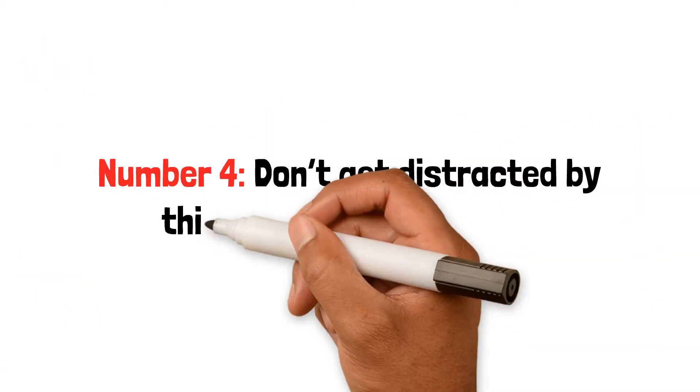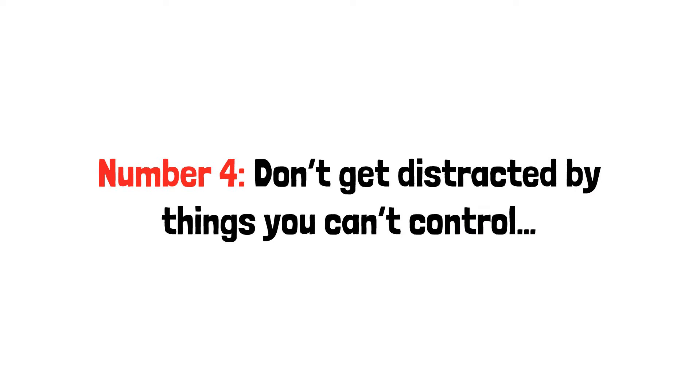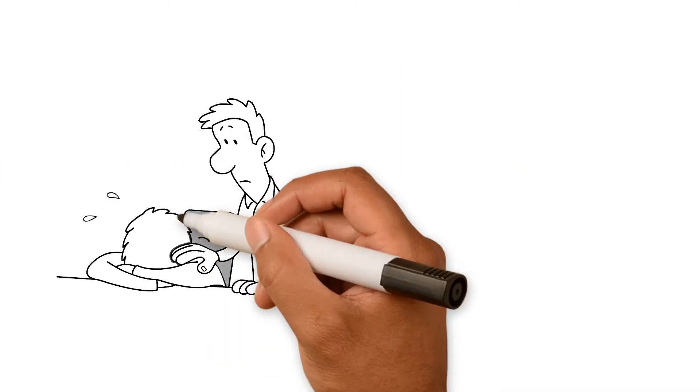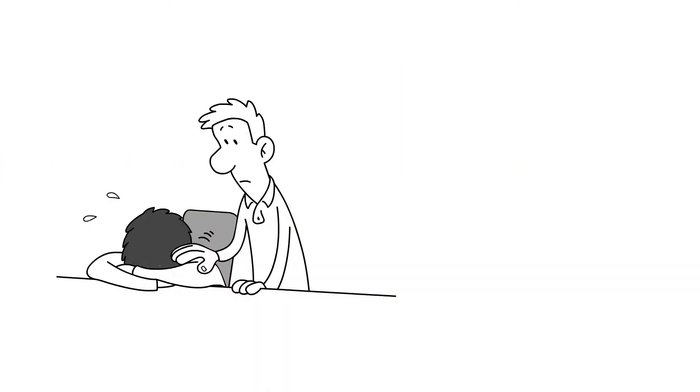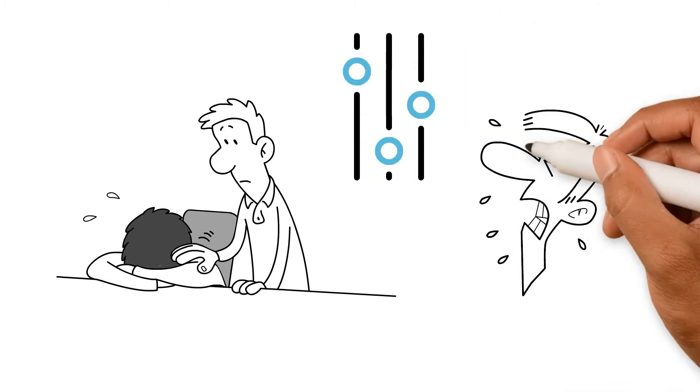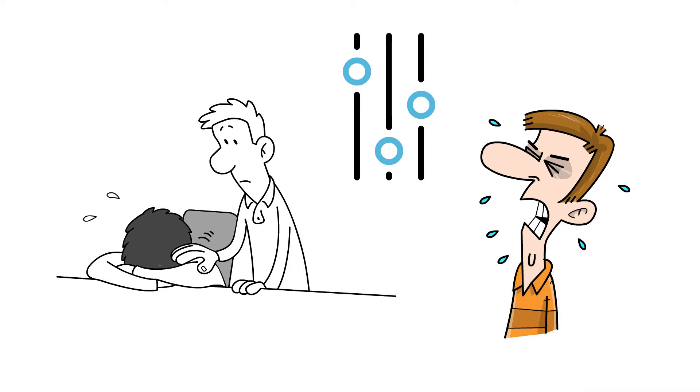Number four. Don't get distracted by things you can't control. Life is unpredictable and full of incidents that are unpleasant and out of your control. As much as you think you can control what goes on around you, in reality, you can only control certain things.